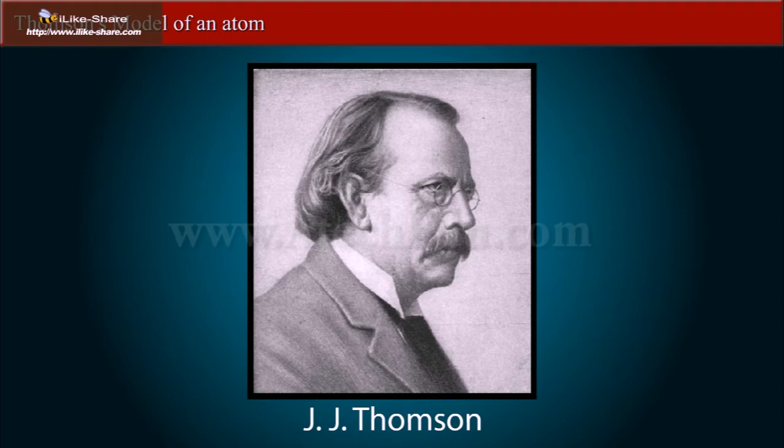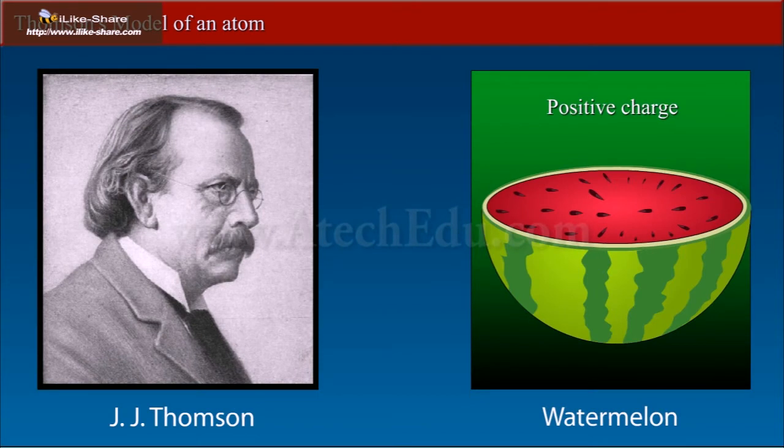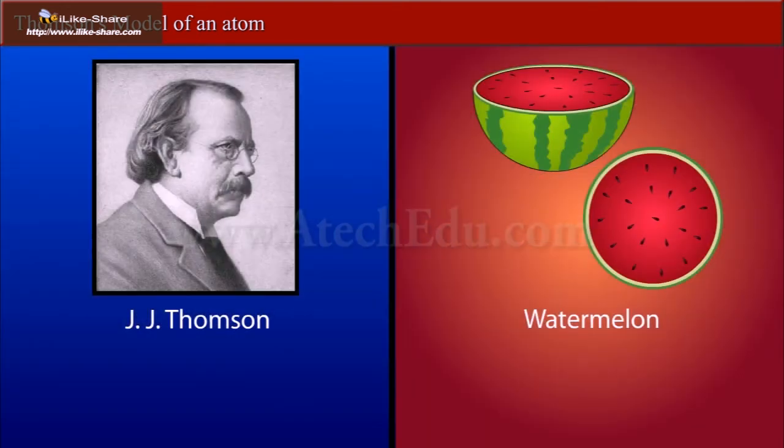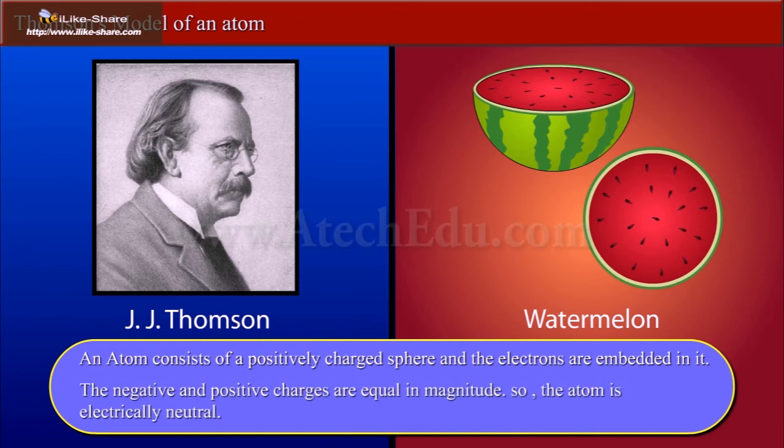According to Thomson's model, an atom can be considered as a watermelon. The red edible part was like a positive charge, whereas the seeds were like the electrons studded in the positively charged sphere.